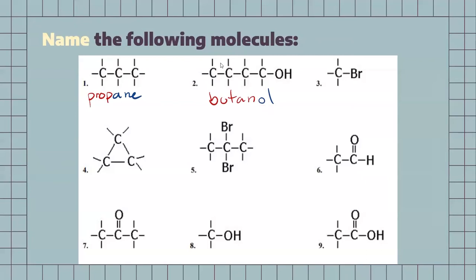Next up, we have a carbon with a halide group. Since it's only one carbon and there's no double bonds or anything, I know it's going to be an alkane, but because of the halogen, we have to identify which one it is. So, we're going to call this one bromomethane — bromo for the bromine and methane for that one carbon chain.